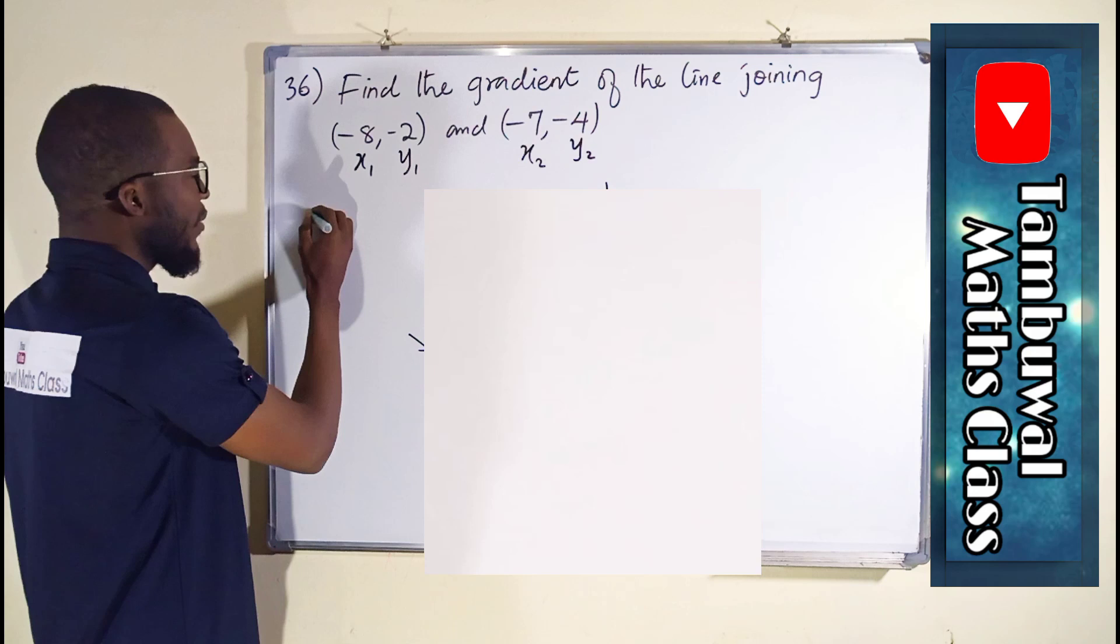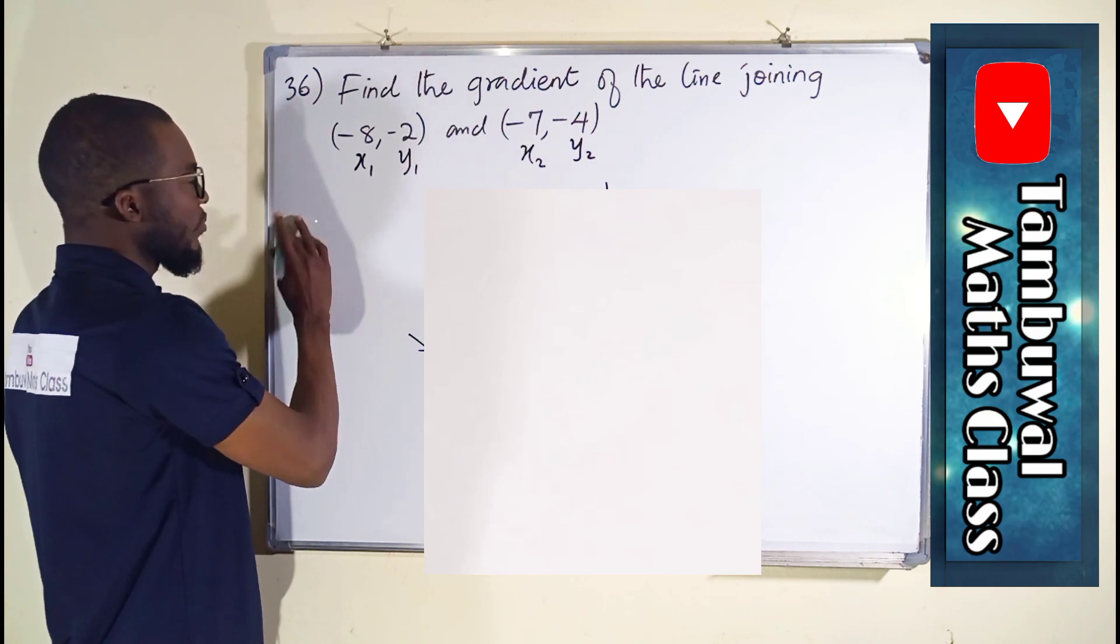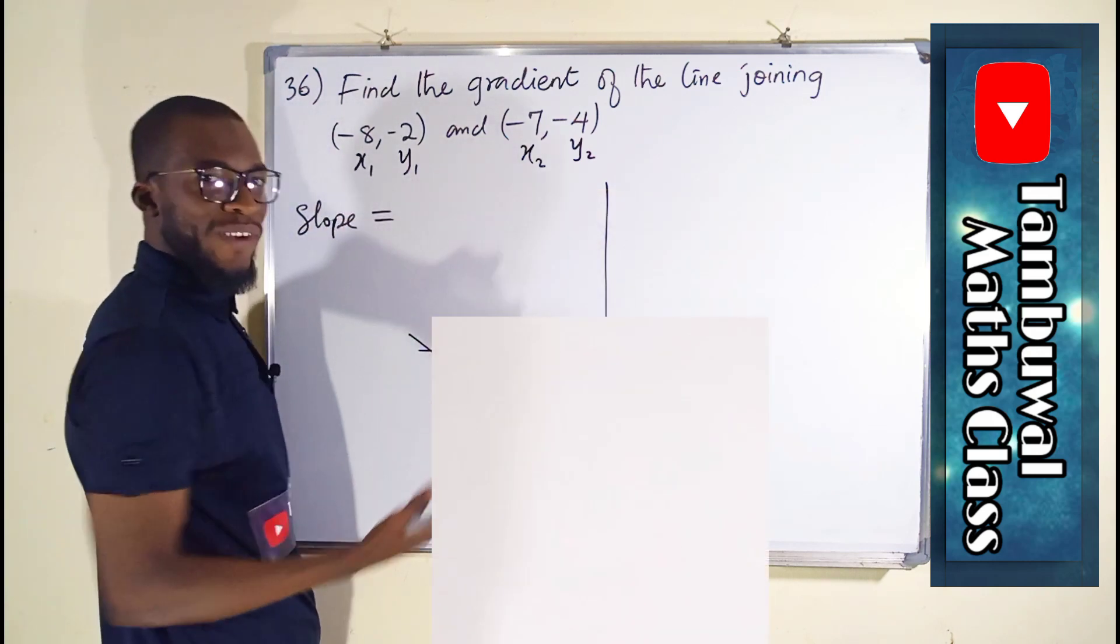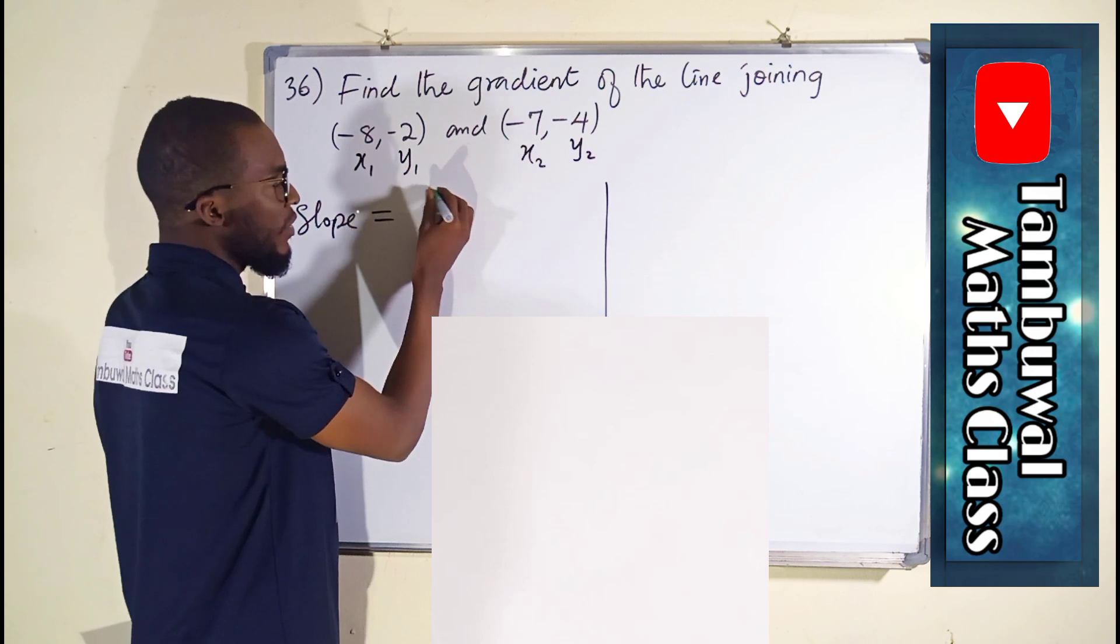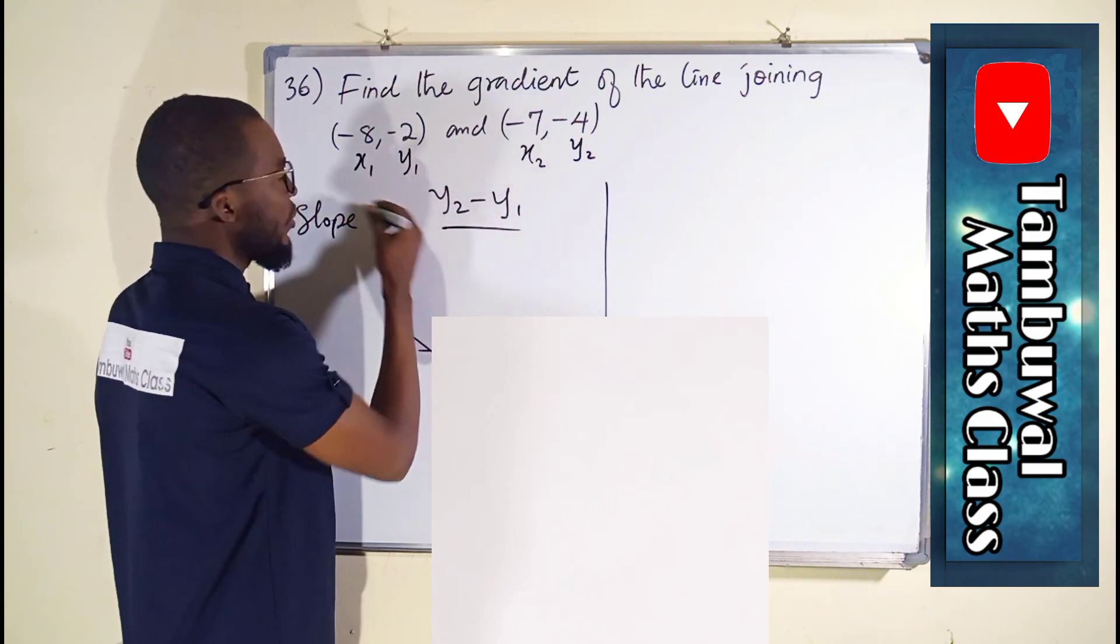And you remember our formula for slope or gradient is equal to change in y divided by change in x, and that change in y is y2 minus y1 divided by change in x, which is x2 minus x1.